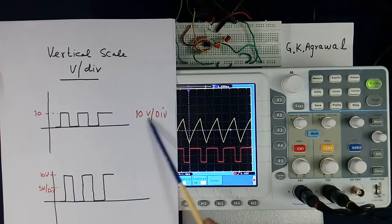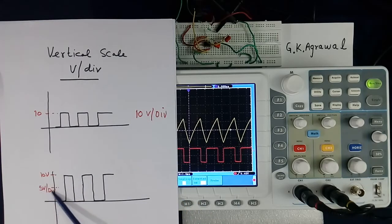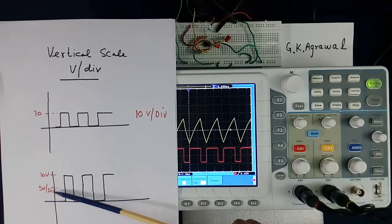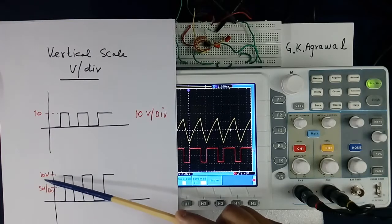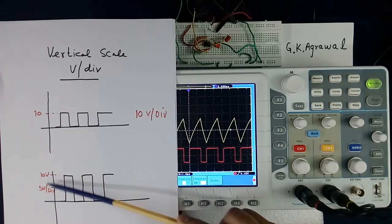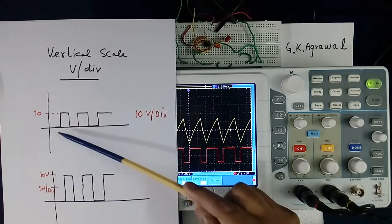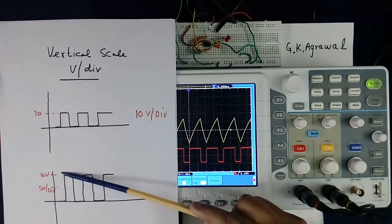Now if we change from 10 volt to 5 volt, so one division from here to here is 5 volt. To make 10 volt it will require two divisions. So this signal will become like this.